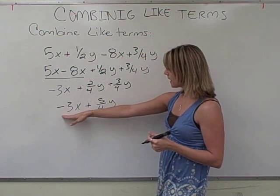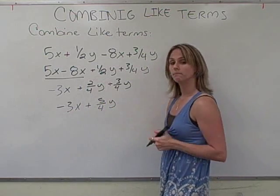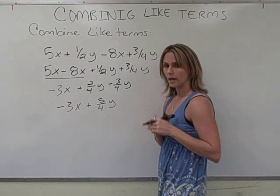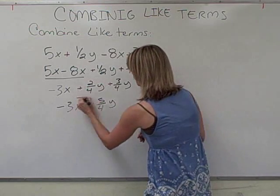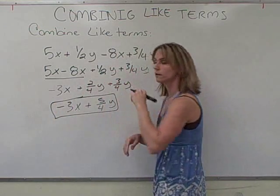Now can we combine negative 3X and 5 fourths Y? We cannot. Because they do not have the same variables in that. So at this point, we are done.